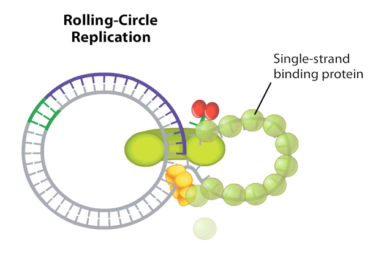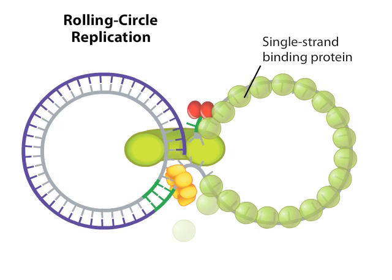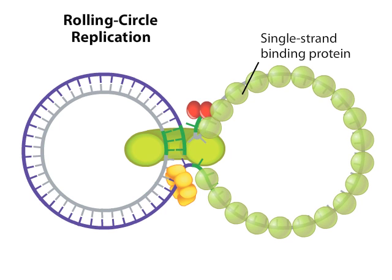As replication proceeds, the nicked strand, which continues to be covered with single-strand DNA binding proteins, progressively peels off until replication of the intact strand is complete.